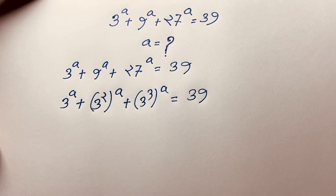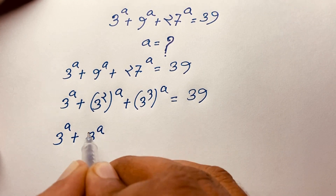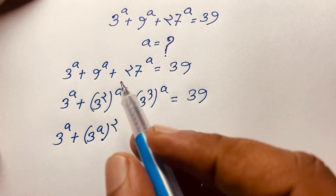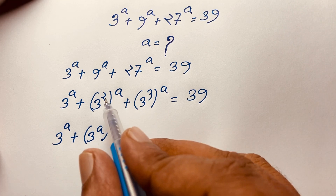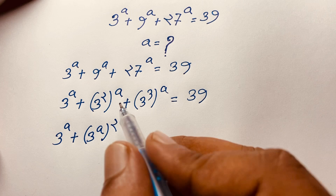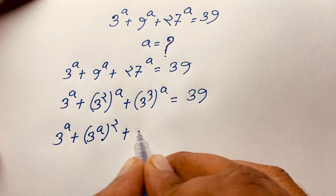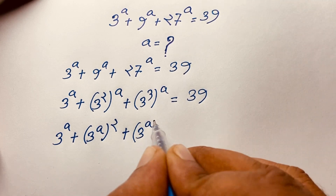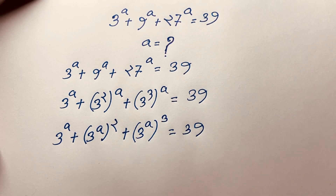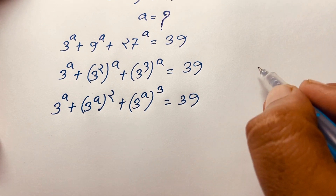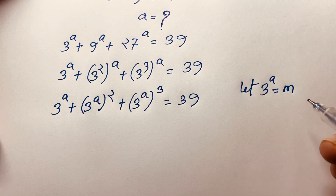Now you can see this becomes 3 to the power a, plus (3 to the power a) squared, because we move the exponent inside the bracket. We know that (a to the power n) whole to the power m equals a to the power m times n — both are the same. Then plus (3 to the power a) cubed, equals 39.